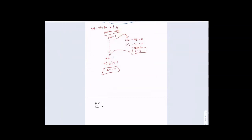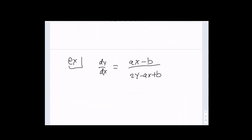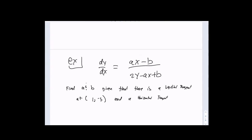Let's do another example. In this problem I'm not going to give you the original implicit function. Instead, dy/dx = (ax - b) / (2y - ax + b) is the only relationship I'm giving you. Find a and b given that there is a vertical tangent at (1, -5) and a horizontal tangent at (5, 1).